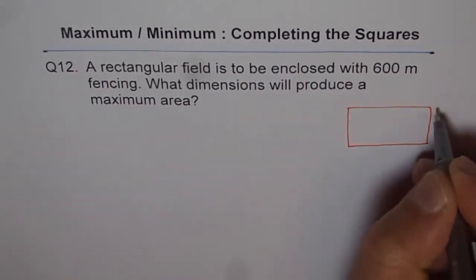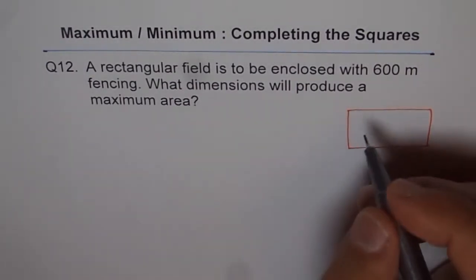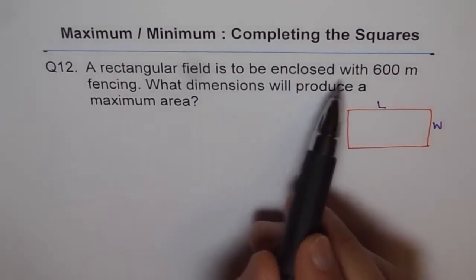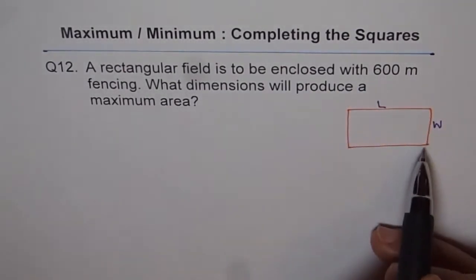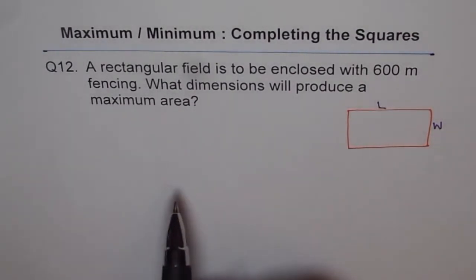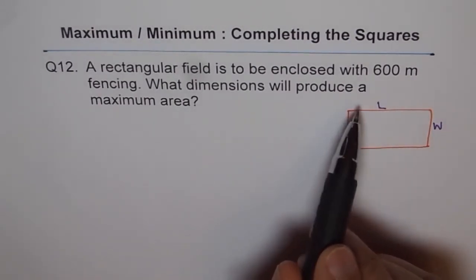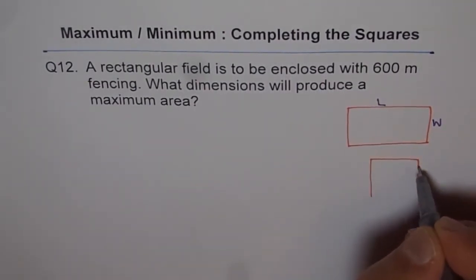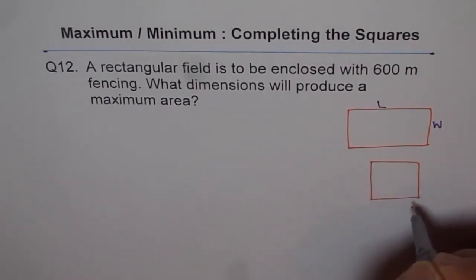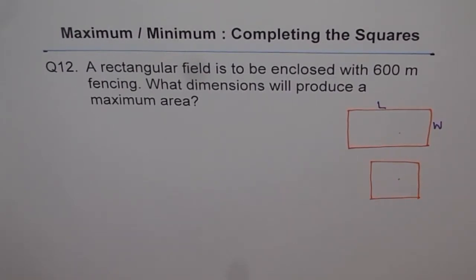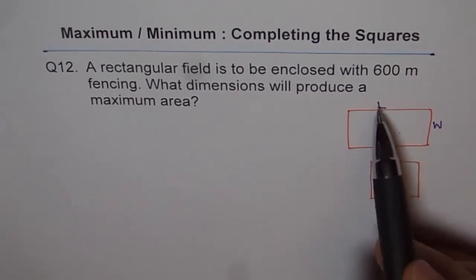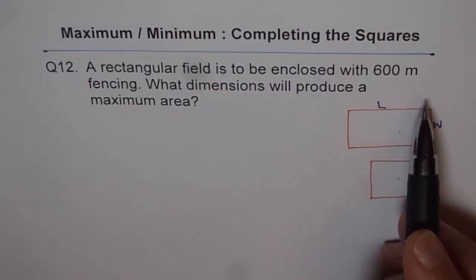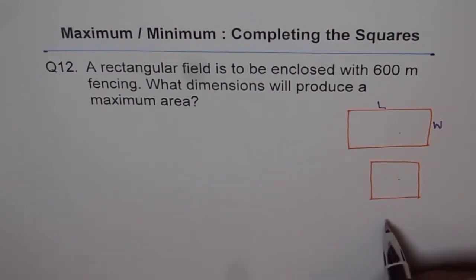The field is to be fenced, meaning the outside boundary. Let the length and width be L and W. When we say a rectangular field is to be enclosed with 600 meter fencing, that means all the distance around is 600 meters. There could be different combinations of length and width — different shapes could each have a perimeter of 600 meters but different areas. What combination of length and width gives maximum area with perimeter remaining 600 meters? That is the question before us.